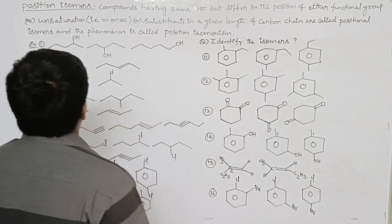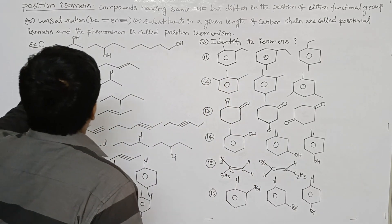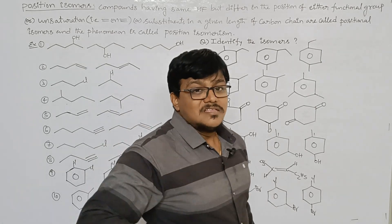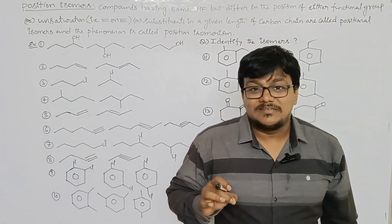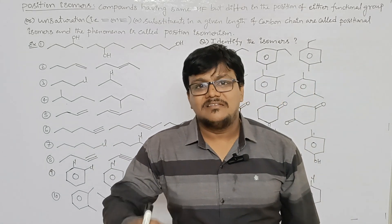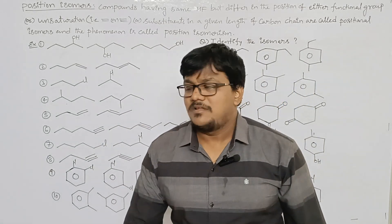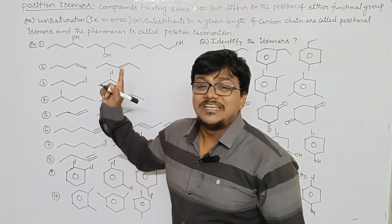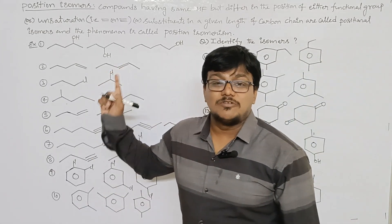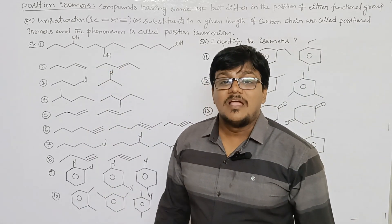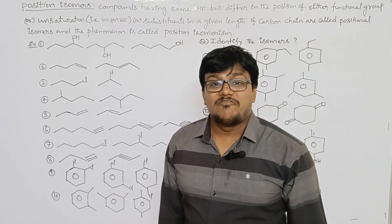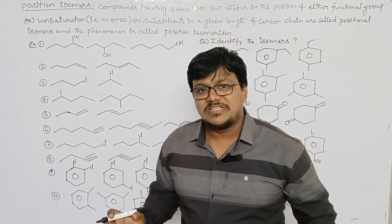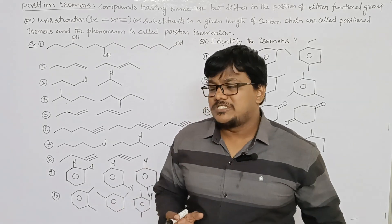This is also named as a locant in the given length of the carbon chain, and called positional isomers. So, positional isomers means compounds having the same molecular formula but differing in the position of functional groups. In case of positional isomers, the isomeric number will be the same. The only difference is position.